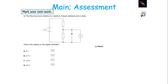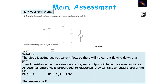This next question asks: what is the reading on the digital voltmeter in this potential divider circuit? Note that the resistors have equal resistance, and there's a diode acting in the opposite direction to the current flow, so there will be no current flowing down that particular path. Since each resistor has the same resistance, each output will have the same resistance. In a potential divider, potential difference is directly proportional to resistance, so they'll each take an equal share of the EMF. The EMF is 3 volts with 2 equal outputs, so it's 3 divided by 2, giving 1.5 volts.